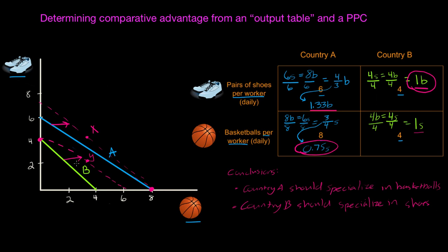In the next video, we're going to look at a different type of situation in which we're given not the number of outputs a country can produce, but rather the amount of inputs needed to produce a single unit of two different goods.